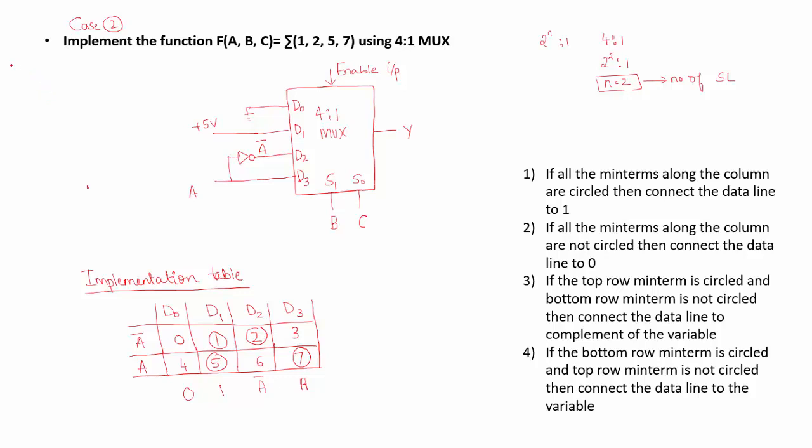I can cross verify this. The inputs are A, B, C. B and C is your select lines. Y is your output. So if I connect A, B, C to 0, 0, 0, let me see what will be the output. D0 is 0, D1 is 1. Since A is 0, D3 is 0 and D2 is 1. Since B and C are 0, 0, D0 gets connected to Y, and D0 is connected to ground. Hence, output will be 0.